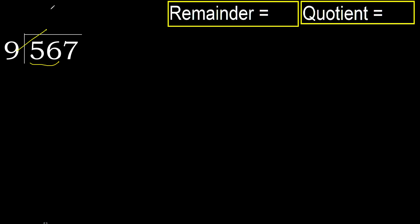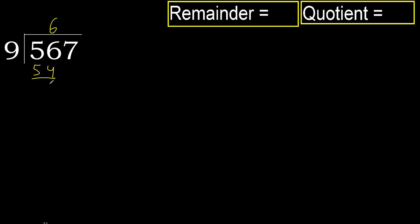9 — multiply by which number is nearest to 56 but not greater. 9 multiplied by 7 is 63, which is greater. 9 multiplied by 6 is 54, which is not greater. Subtract: 56 minus 54 equals 2.